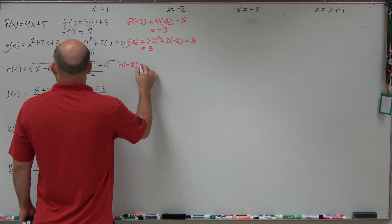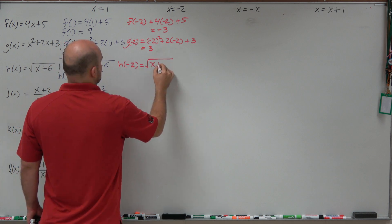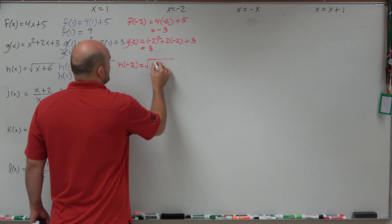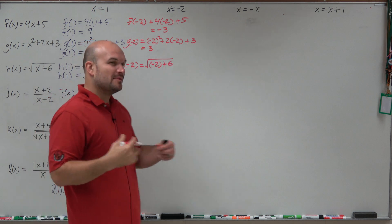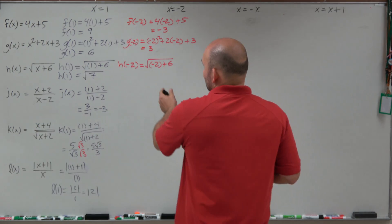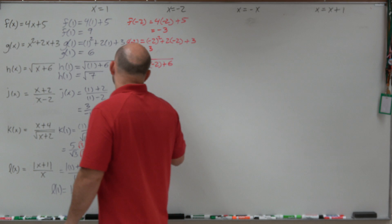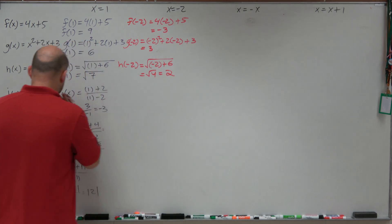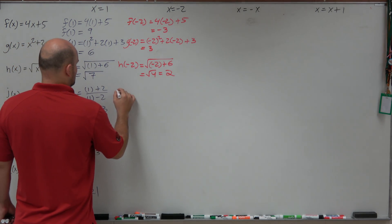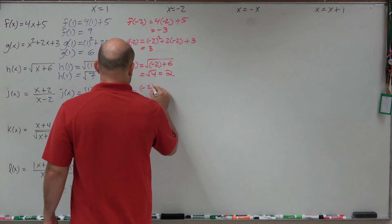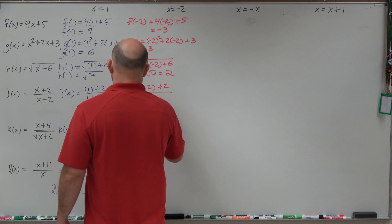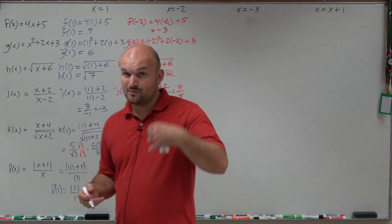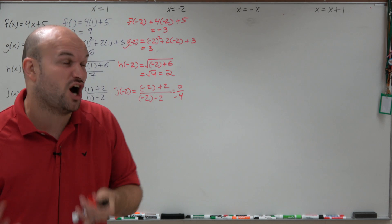So g of negative 2 is 4 minus 4 plus 3, which equals positive 3. For h of negative 2, we have negative 2 plus 6, which equals square root of 4. Unlike the square root of 7, we can simplify that to 2. For j of negative 2: negative 2 plus 2 is 0, and negative 2 minus 2 is negative 4. Whenever you have 0 in the numerator divided by anything, it's always going to equal 0.